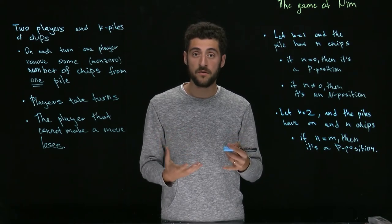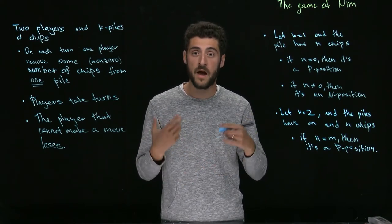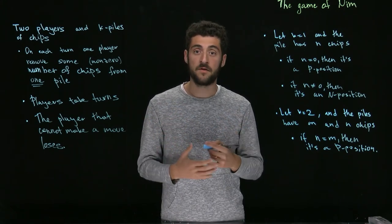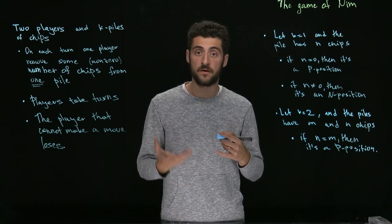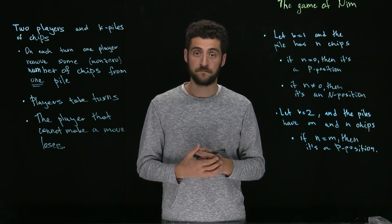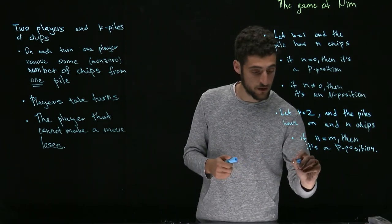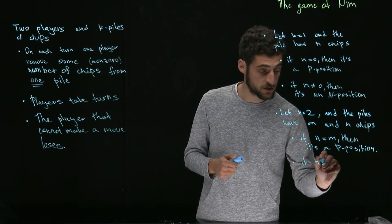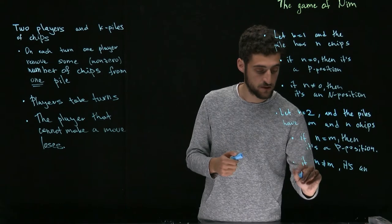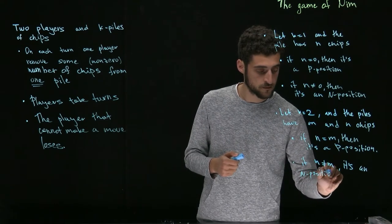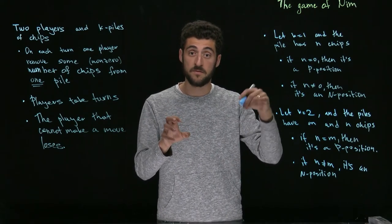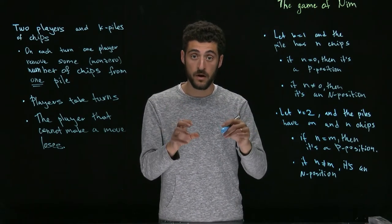In other words, after our move, the situation is always symmetric — the piles have an equal number of chips. At the very end, after our move, it would have zero and zero chips, which means P1 wins. However, if n is not equal to m, it's an N position, since we can just remove some number of chips from the bigger pile to make them equal and go to a P position.